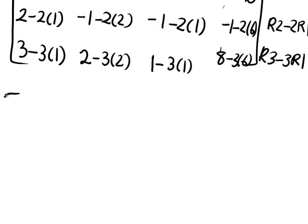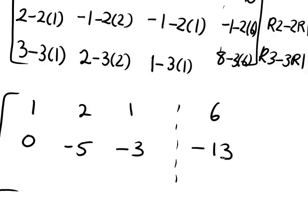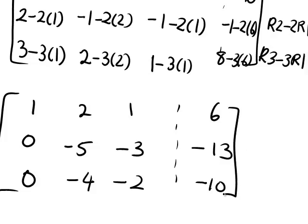Simplifying, our new tableau is: row one unchanged as one, two, one, six; row two becomes zero, negative five, negative three, negative thirteen; and row three simplifies to zero, negative four, negative two, negative ten. It's worth keeping the row sums at each stage. The first row sum is still ten, the second row sum is negative twenty-one, and the third is negative sixteen.